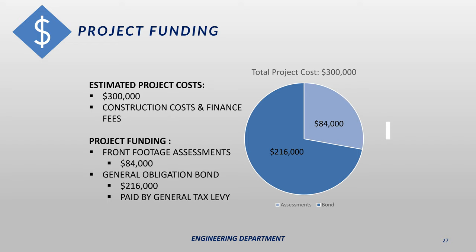When the city does projects like this, we typically get a lot of questions related to funding. We've estimated that the project will cost approximately $300,000, including all costs associated with construction as well as financing fees. The funding comes from two sources: special assessments and general obligation bonds. Front footage assessments are expected to generate approximately $84,000 — roughly a quarter of the project cost. The remaining $216,000, roughly three quarters, will be funded through general obligation bonds that the city obtains on the open market, paid through the city's general tax levy fund.